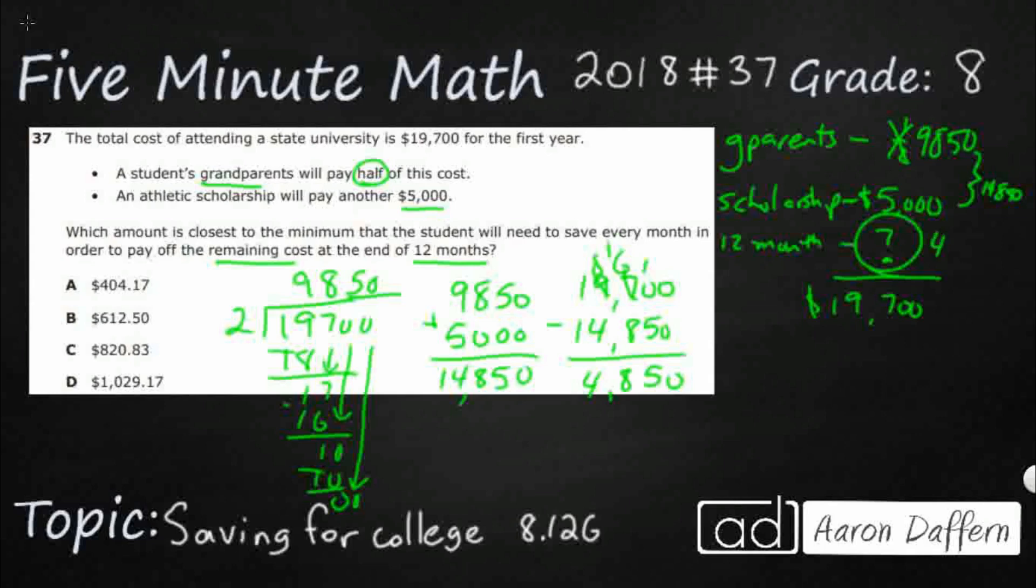So that's what we need to save over 12 months. Now obviously there's no answer for that, thankfully, because that would be too easy for us to get. But that's not even the answer because we need to do over 12 months. We need to save every month.